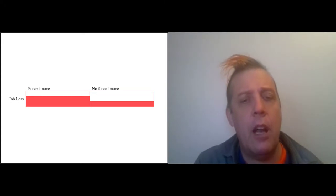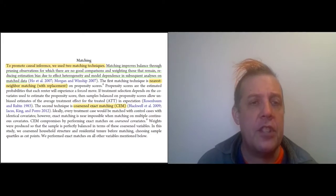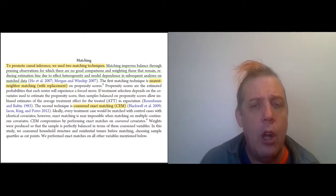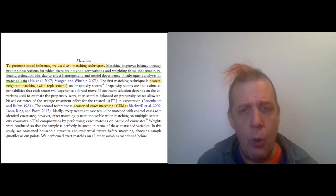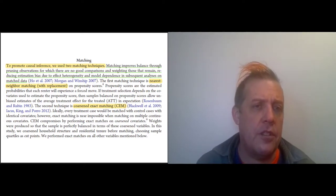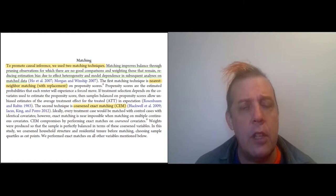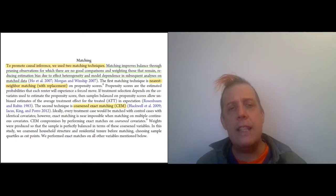But still, we need to get a little bit further in. We need to talk about how we move from correlation to causation here. And so this is what Desmond and Gershenson say: 'To promote causal inference, we used two matching techniques. Matching improves balance by pruning observations for which there are no good comparison and weighting those that remain.'